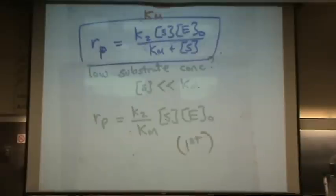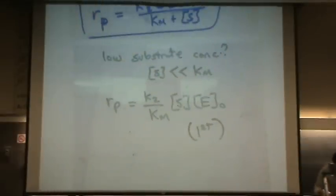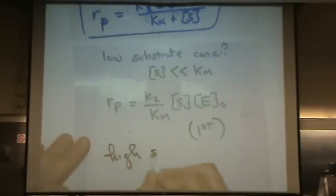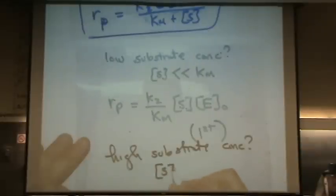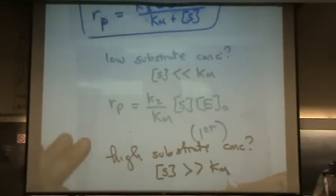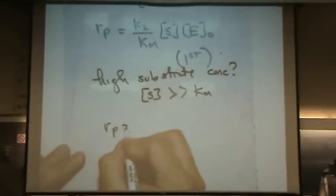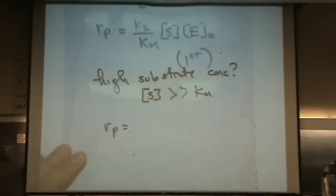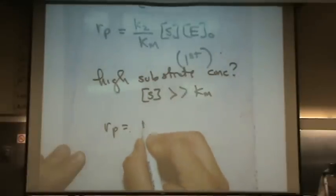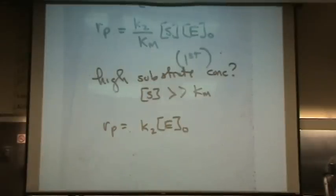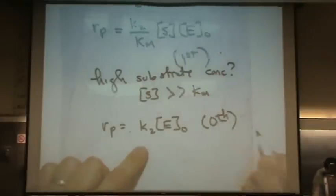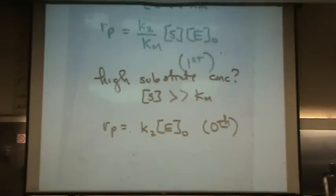In a contrasting example, if we have high substrate concentration, then S would be really big — a lot bigger than KM. So R_P would simplify to K2 times E₀. What's the order of this reaction? This would be zero order. So when there's too much substrate, the enzyme starts working in zero order.